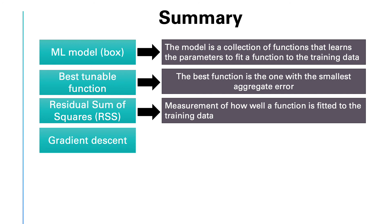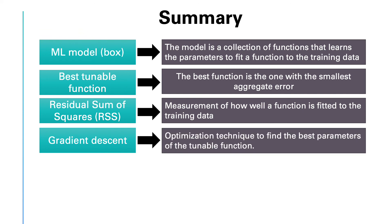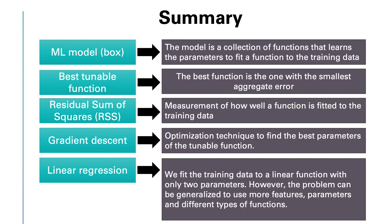We talked about gradient descent, which is an optimization technique to find the best parameters of the tunable function by minimizing the error. We provided an example of linear regression. We fit the training data to a linear function with only two parameters.